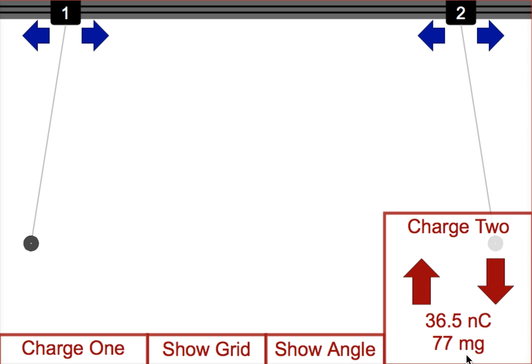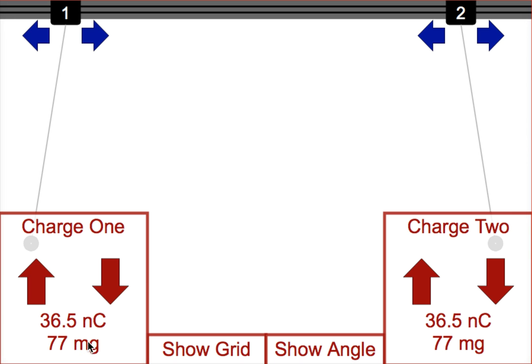You can see what the charges are by clicking on charge 2 and charge 1. You can also see both pith balls will have exactly the same mass.